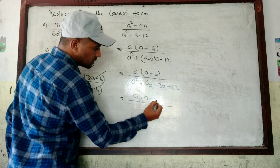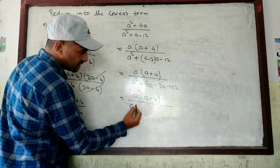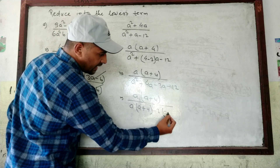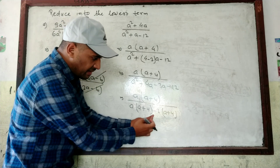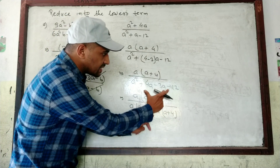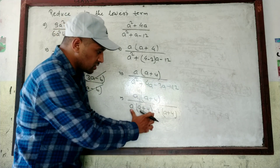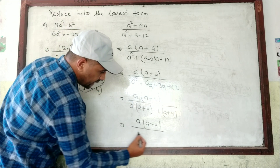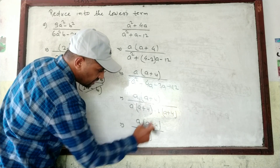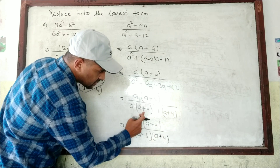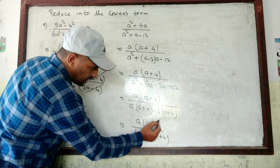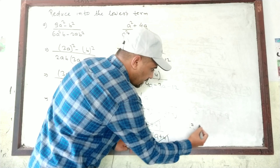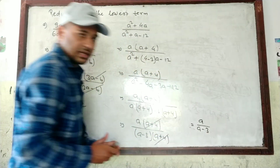Opening the bracket: a² + 4a − 3a − 12. From the first two terms take common a, giving a(a+4). From the last two terms take common −3, giving −3(a+4). Remember: when minus is common, we change the signs — minus becomes plus and plus becomes minus. So the denominator factors as (a+4)(a−3). The (a+4) terms cancel, leaving the answer: a divided by (a−3).